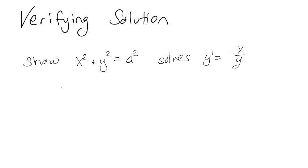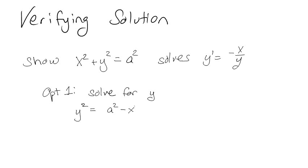There are two ways to do this. Option one is to solve for y — probably the most straightforward since it's not already solved. So if we solve for y, we get y² = a² − x², and then y = ±√(a² − x²). The question is: do we use plus or minus? I'll use the plus for now, and then show you why it doesn't matter.